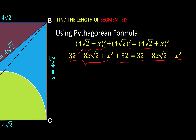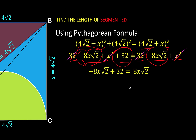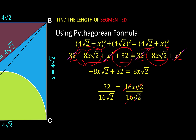The 32 terms and the X² terms cancel out. What remains is −8X√2 + 32 on the left and 8X√2 on the right. Adding 8X√2 to both sides gives 32 = 16X√2. Dividing both sides by 16√2 yields X = 32 / (16√2) = 2/√2.